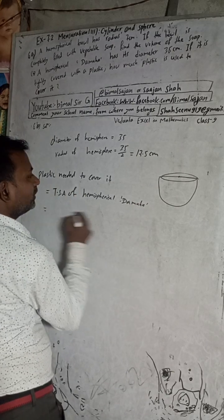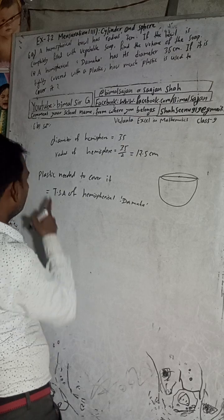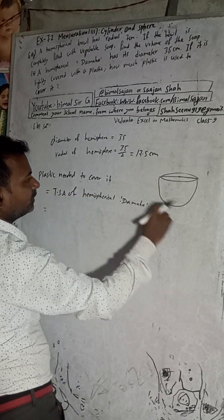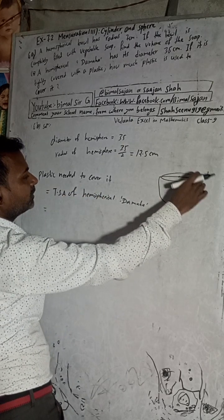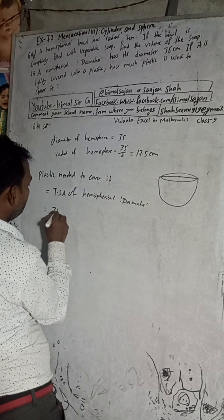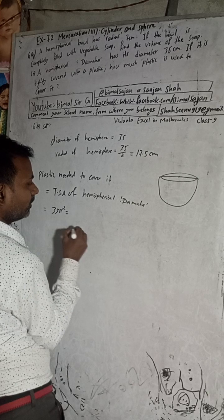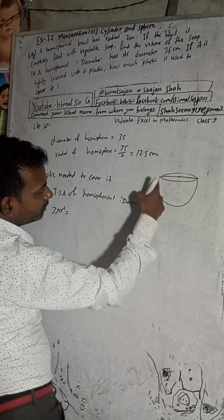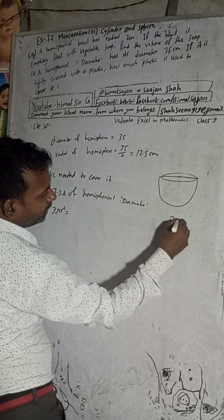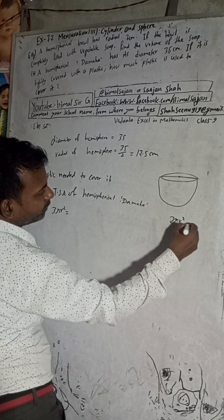Total surface area of the hemispherical dome is equal to the plastic needed to cover it. The total surface area formula is 3πr². This is because the curved surface area is 2πr², and this circular base adds πr², so total is 3πr².